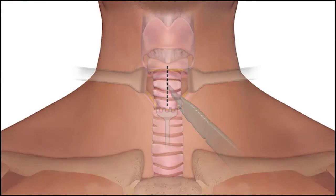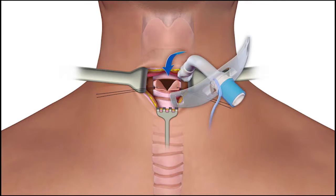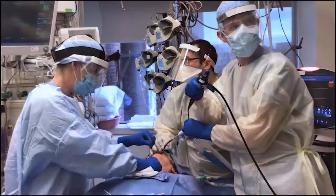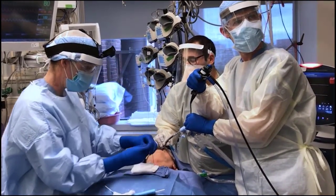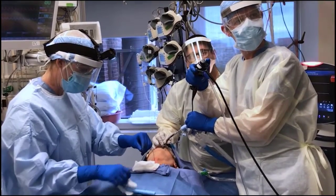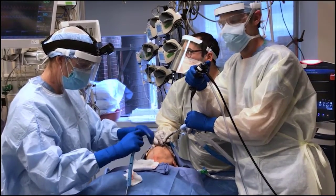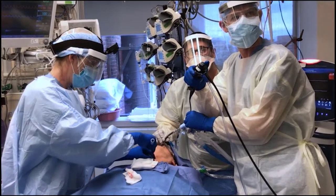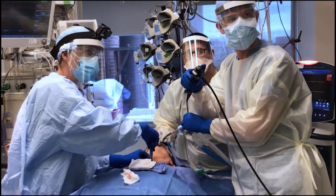The open technique involves dissection of the anterior pre-tracheal tissue and insertion of a tracheostomy tube into the trachea under direct visualization. The percutaneous technique can be performed quickly and safely at the bedside with the use of a modified Seldinger technique and bronchoscopic guidance. This approach is associated with fewer bleeding complications than open tracheostomy and similar long-term morbidity.